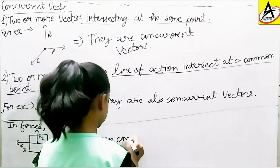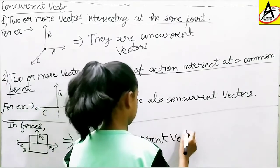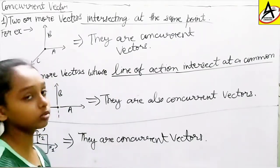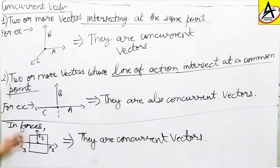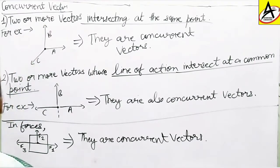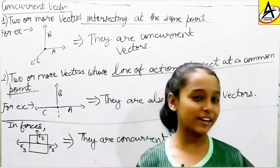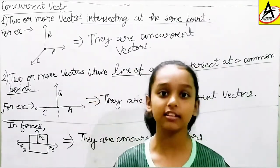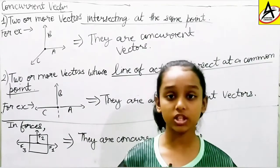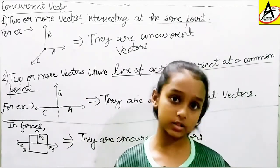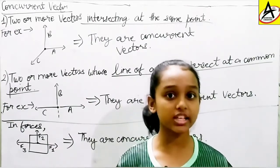So this was all about the two ways to define concurrent vectors, and I also showed you that in forces they can also be concurrent vectors. If you have any difficulty saying 'concurrent' you can say it as 'concurrent' — whichever is easier for you. In the next video we are going to take a practice question on this topic so that it will be easy for you. That's all for today, thanks for watching, have a nice day.